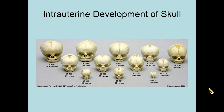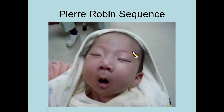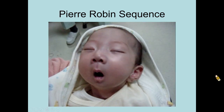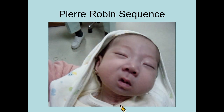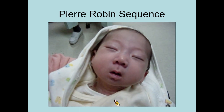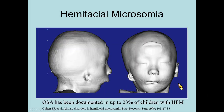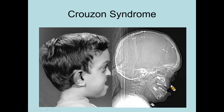This shows the intrauterine development of the skull from very small to ready for birth. For patients with Pierre Robin sequence, we can see the suprasternal depression during sleep. In hemifacial microsomia patients, it has been documented that up to 23% of them have OSA because of the retrusion of the mandible.